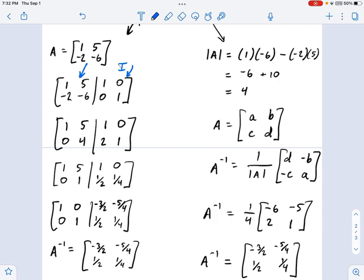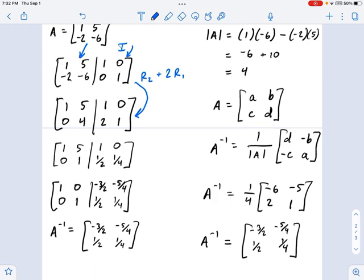First thing I do is I replace row 2 with row 2 plus 2R1, and that brings me down here. I'm assuming you've been over some row operations before, so you can see what I'm doing. Second thing I do is replace row 2 with row 2 divided by 4, and that'll bring us down to this step.